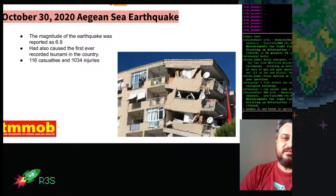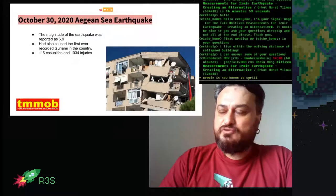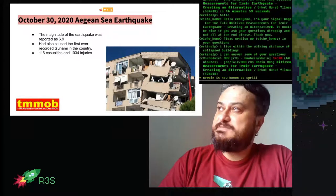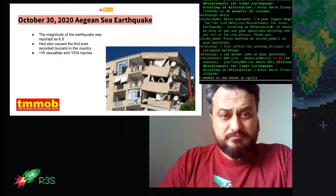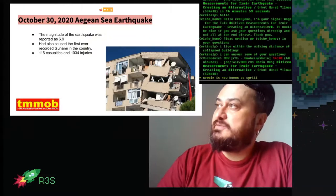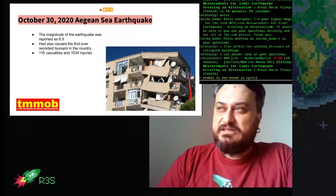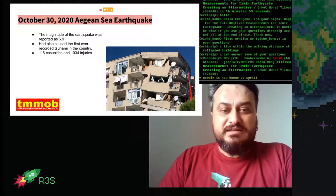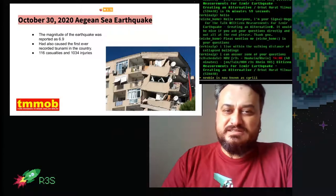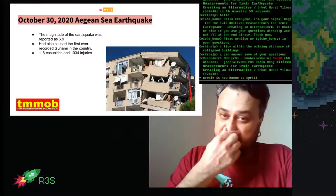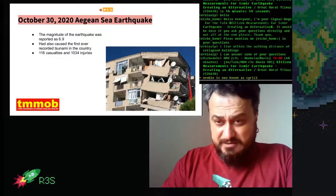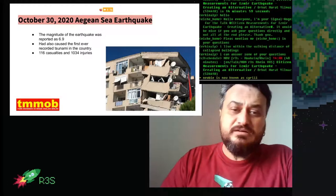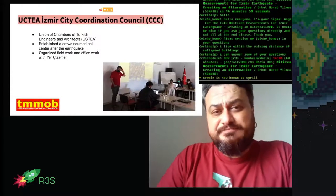On October 30, 2020, an earthquake happened in Izmir with a magnitude reported as 6.9. The earthquake also caused the first tsunami recorded in our country — it happened in a small town near Izmir called Sığacık. The result was 116 casualties and over 1,030 injuries. This is a photograph of a demolished building after the earthquake.